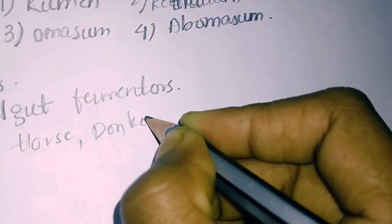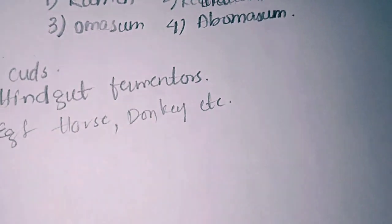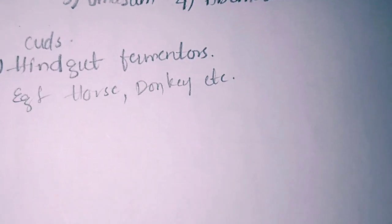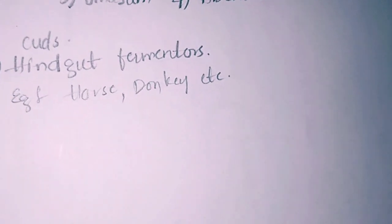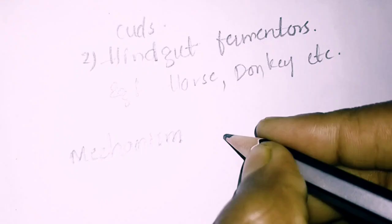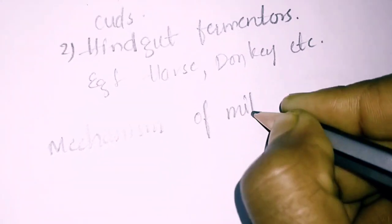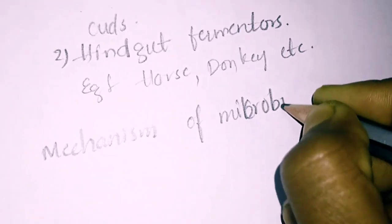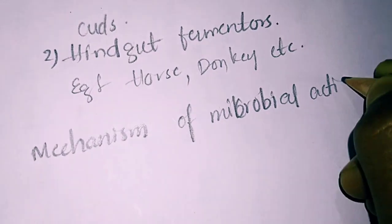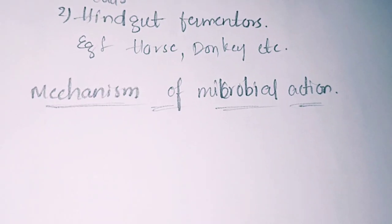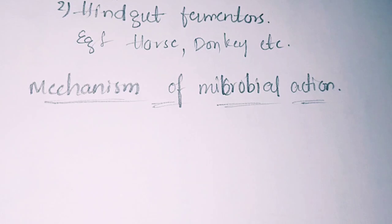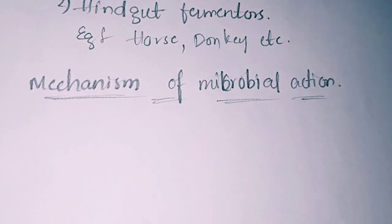Then if we see the mechanism of microbial action during the process of cellulose digestion: the microbes produce a group of enzymes called cellulases that are needed to hydrolyze cellulose.